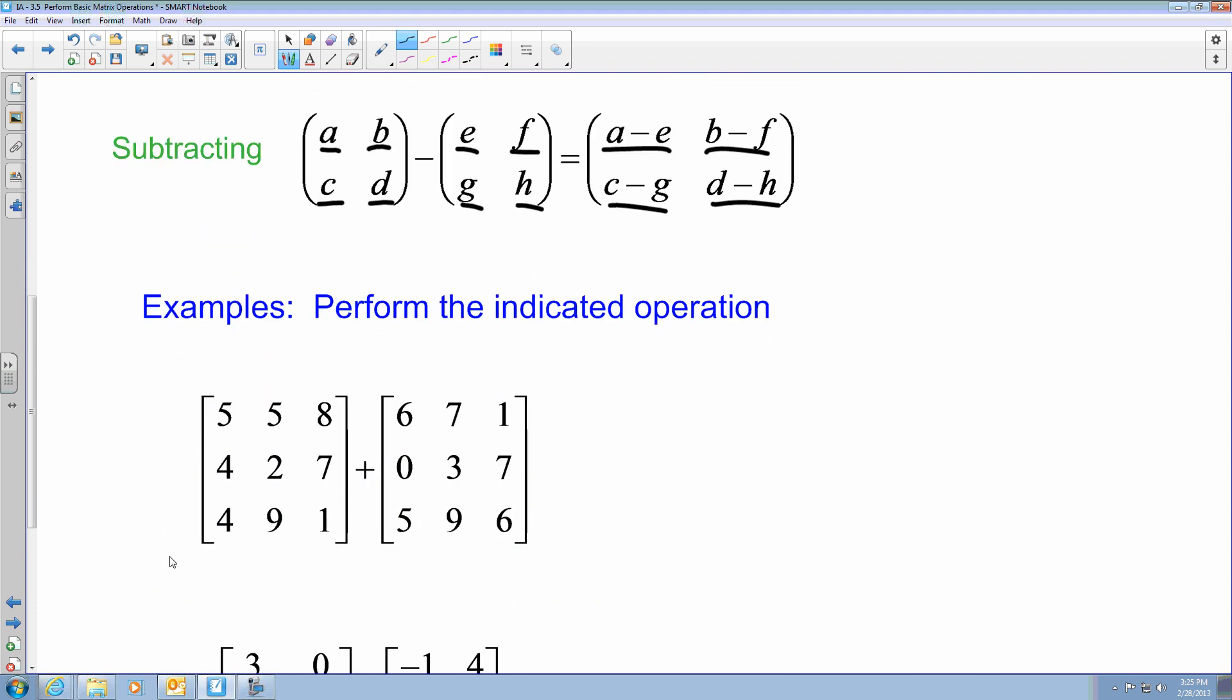So if we are given this example, I am going to create one matrix, and I am going to add each one of these correspondents. So if I just took the first row, it means that I am going to add these two together, these two together, and these two together. So that leaves me with 11, 12, 9. And then if I go to row 2, I am going to say it is 4, 5, 14. The last row, it is going to be 9, 18, 7.